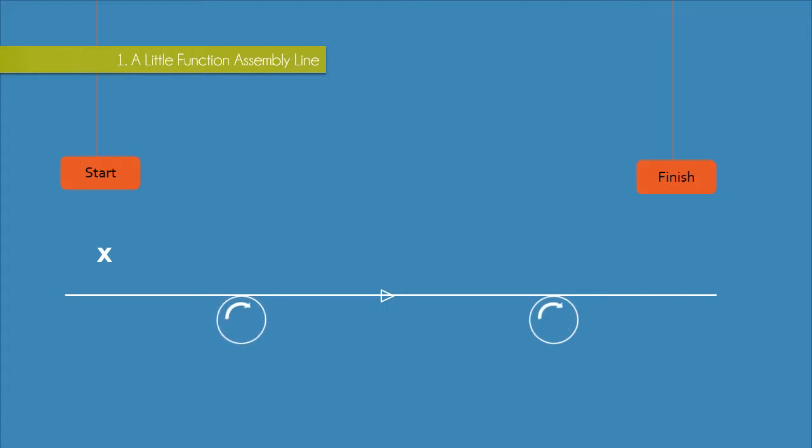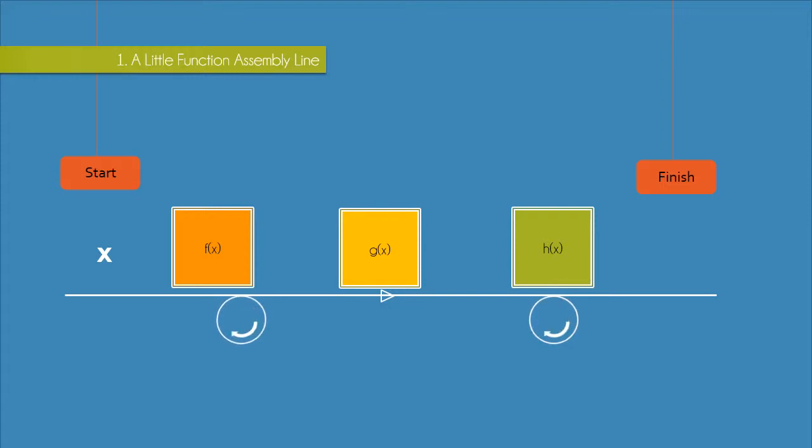Well, let's say I take three different function machines and arrange them one after the other like this. So our input will first pass into f of x and then the output of f of x will be passed to g of x and so on.